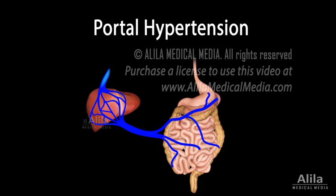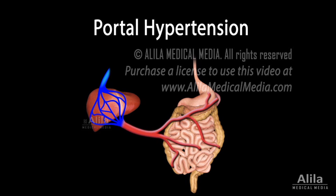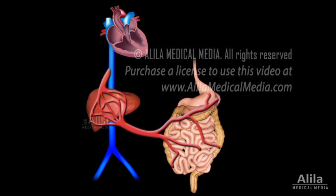Portal hypertension refers to high blood pressure in the hepatic portal vein, the large vein that carries blood from the digestive tract, spleen, and pancreas to the liver. Within the liver, blood runs through tiny channels where it exchanges contents with the liver cells. This is where nutrients are processed, and toxins and pathogens are removed from the blood before it exits the liver via the hepatic veins to enter the general circulation.